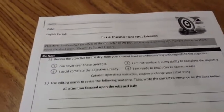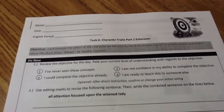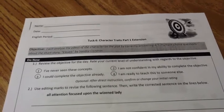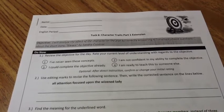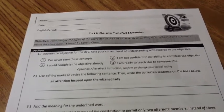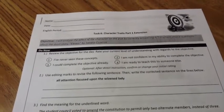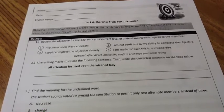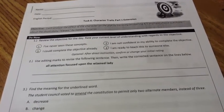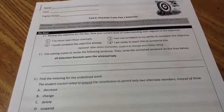Let's start with the do now. The first thing we always do is read our objective. The objective for today's lesson is: I will analyze the effects of the character on the plot by correctly answering four out of five multiple choice questions about the short story 'Eleven' by Sandra Cisneros — I believe is how you pronounce her name. Go ahead and review the objective and rate your current level of understanding. Push pause if you need to at this time to rate yourself.